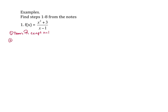Step two: let's find the x-intercept and the y-intercept. For the x-intercept, I have to set x squared plus three equal to zero. In this case, it's going to be imaginary, so I'm not going to worry about it — I'd have to take the square root of negative three. For the y-intercept, we plug in zero for x. So f of zero gives us zero plus three over zero minus one, which is negative three. So y equals negative three is my y-intercept.